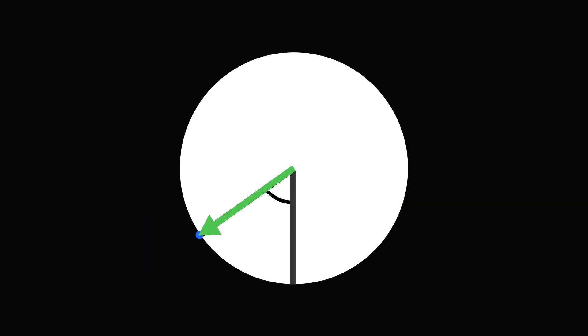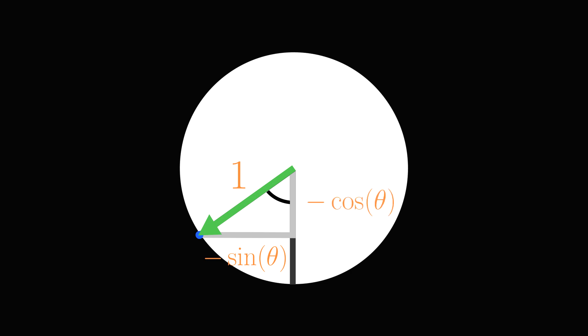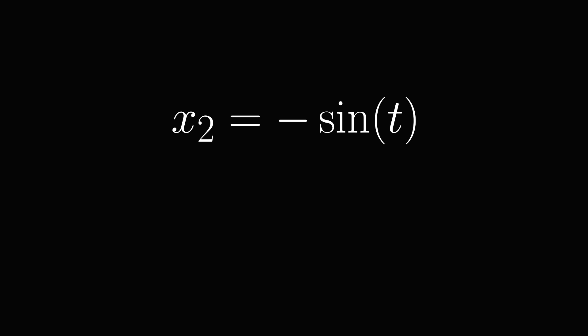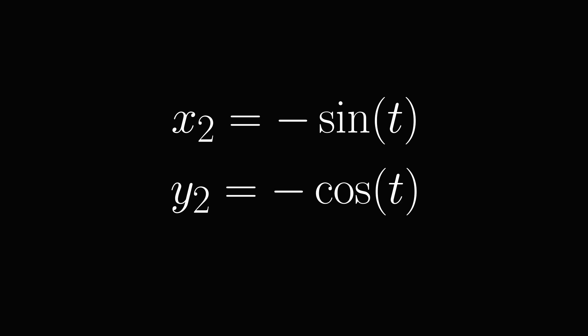Now for the rotational offset. Notice that we're looking at a function that traces out the unit circle. However, we're rotating clockwise and we're starting at (0, -1). If you construct a right-angle triangle and set the hypotenuse to 1, it's easy to see that the x-coordinate is always equal to negative sine theta, and the y-coordinate is always equal to negative cosine theta. This means that x2 equals negative sine theta, and y2 equals negative cosine theta.